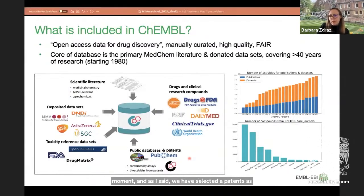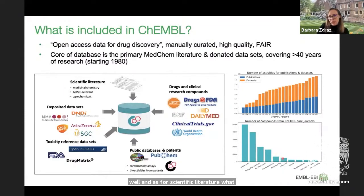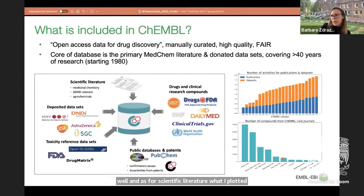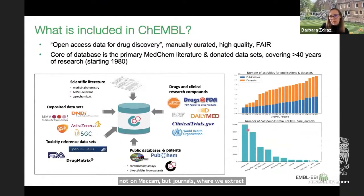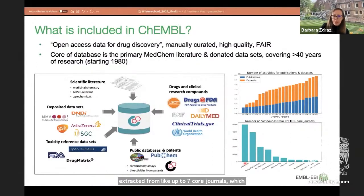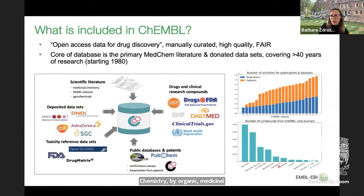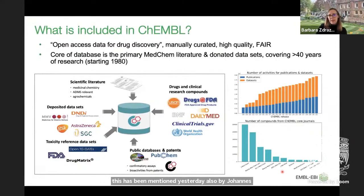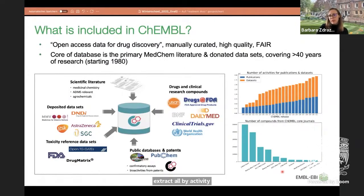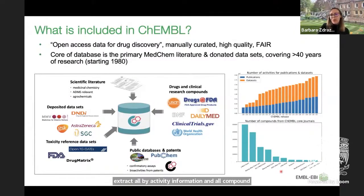For scientific literature, we extract information from more than 200 different MedChem journals. But most of the information comes from up to seven core journals, which include the Journal of Medicinal Chemistry, Bioorganic Medicinal Chemistry Letters, Journal of Natural Products, and so on. This was also mentioned by Johannes Kirchmeyer. We extract all bioactivity information and all compound information from papers, so not all compounds entering ChEMBL from the Journal of Natural Products are natural products.